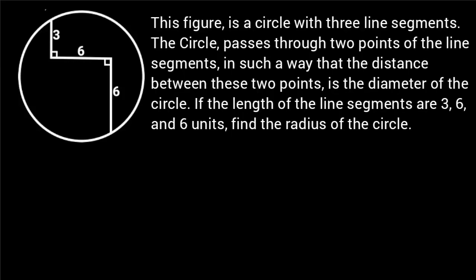This figure is a circle with three line segments. The circle passes through two points of the line segments in such a way that the distance between these two points is the diameter of the circle. If the length of the line segments are 3, 6, and 6 units, find the radius of the circle.